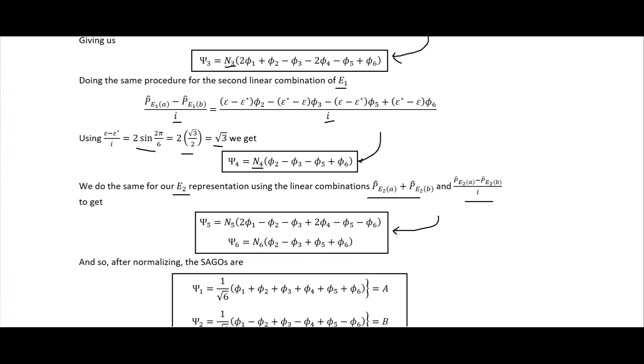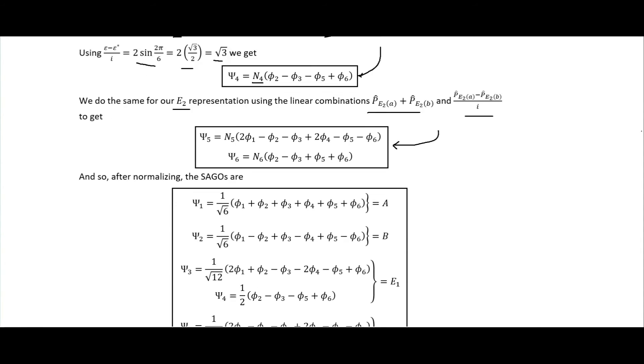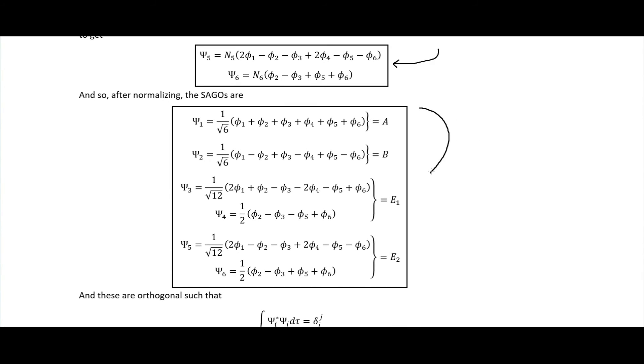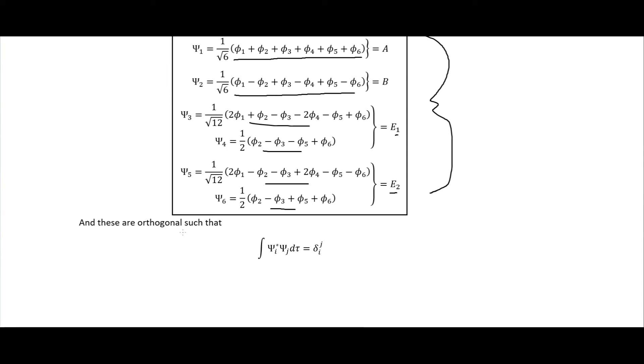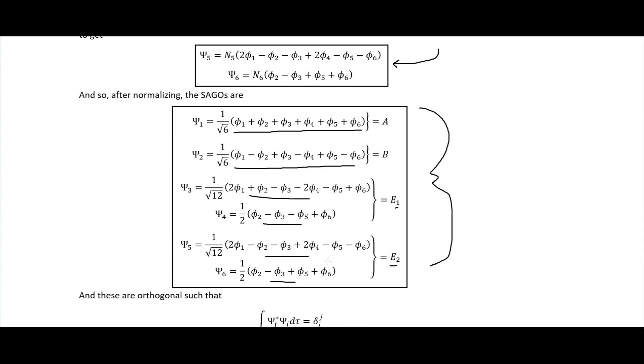And so after normalizing, we end up with these six symmetry adapted group orbitals right here. And so we have the totally symmetric one here, we have this with the alternating positives and negatives, then these two right here which come from our E1, then these two right here which come from our E2 representation. So these are orthogonal such that if we did the integral of this inner product here we would get the Kronecker delta. So when we do that with any that are different we would get zero, but if we did it with the same one twice it would give us a one. But anyway, these as I said are the symmetry adapted group orbitals. We will be using in the next video; I will once again find the relative energies for each of these things, and we will get our symmetry adapted linear combinations.